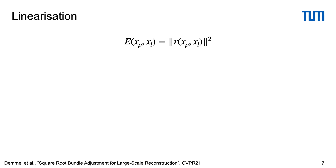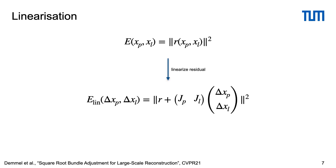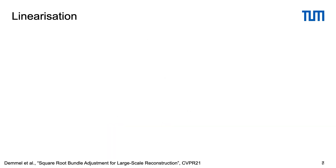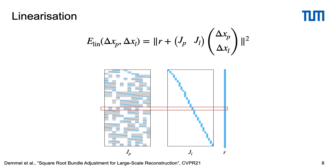We now return to the bundle adjustment cost. This is usually minimized with Gauss-Newton in the Levenberg-Marquardt variant. In every iteration, we linearize the residual at the current state estimate and write the linearized cost in terms of deltas from the linearization point. Most of the runtime is then spent on solving the resulting linear least squares problem. To efficiently do this, we need to exploit the sparsity structure of the Jacobians.